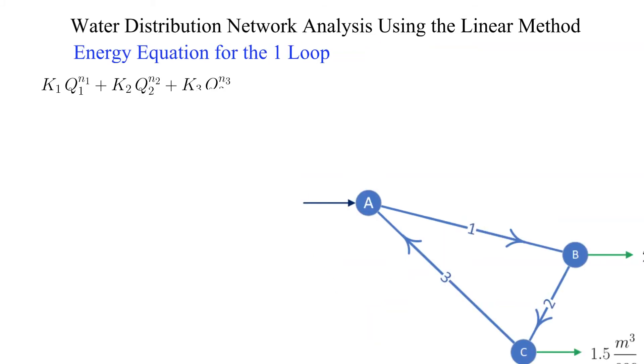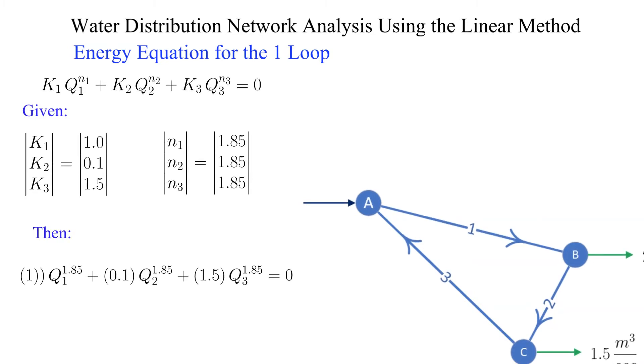Now let's write down the energy equation for the loop. Since it is a hydraulic loop the total change in head around the loop is zero. The energy equation for the loop is defined using the general form of the head loss equation covered previously for each pipe along with the provided data.